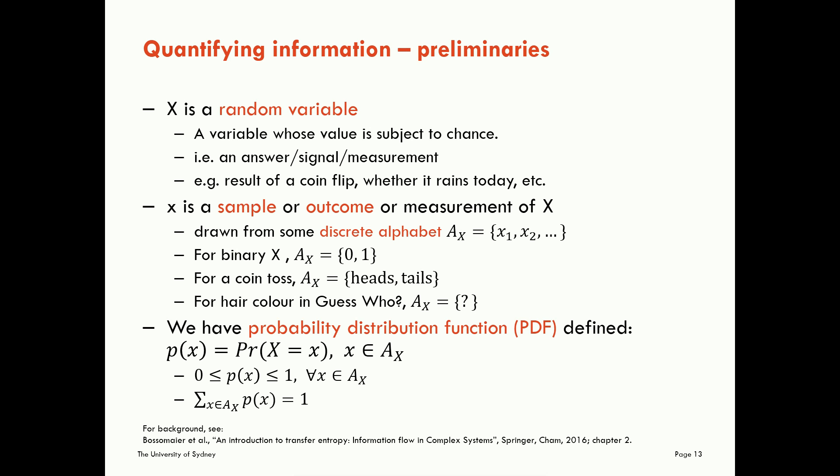To quantify this precisely, we need to go through some preliminaries. So here we're going to be talking about a random variable, capital X. This is a variable whose value is subject to chance. It could be an answer to a question, a signal, a measurement, the result of a coin flip, whether it rains today, and so on. We will use lowercase letters here, lowercase x, to represent a sample or an outcome or a measurement of X, a specific realisation of our random variable. Our realisations are drawn from some discrete alphabet. Here we can write this very mathematically as the set of realisations, x, y, and x2, and so on.